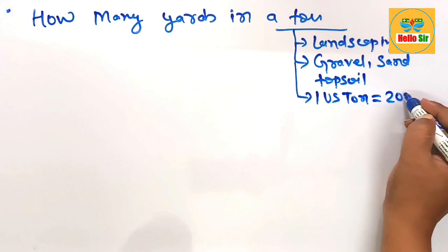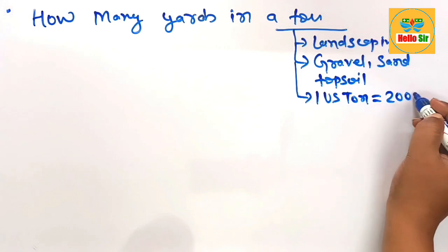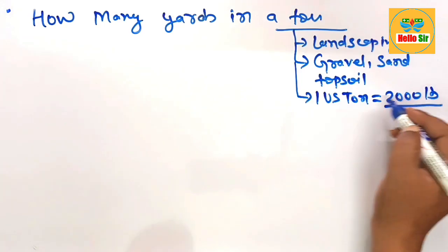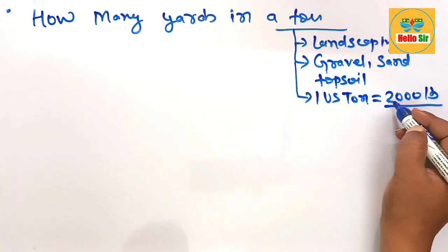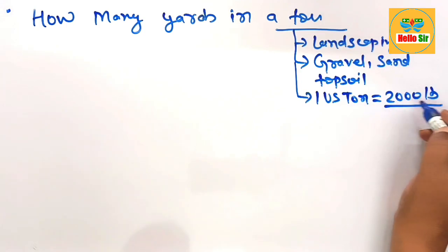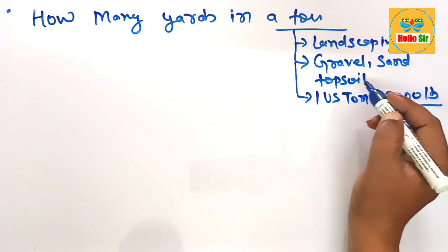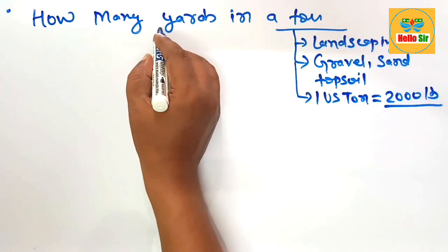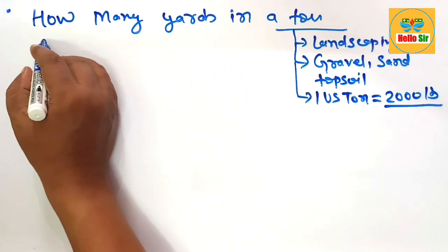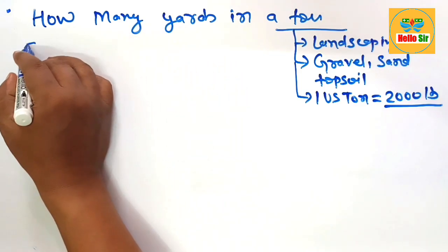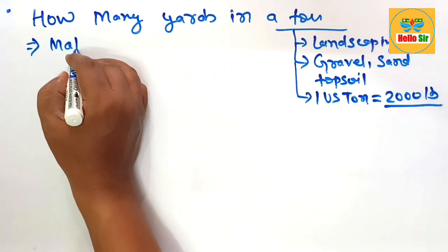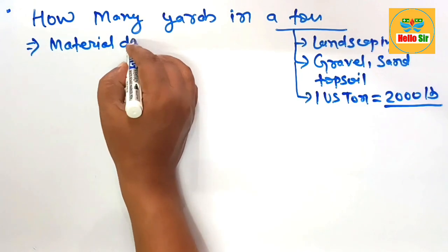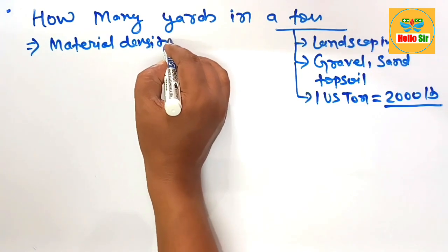One US ton is equal to two thousand pounds — remember this. The number of cubic yards in one ton depends on the material density.